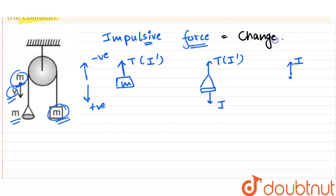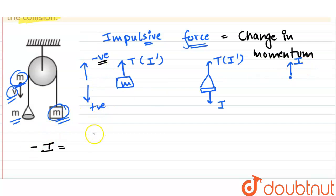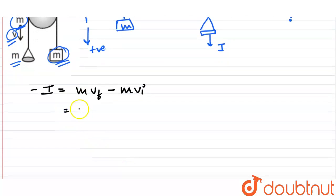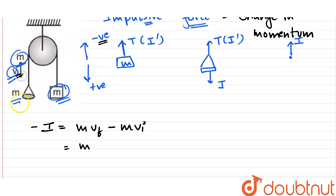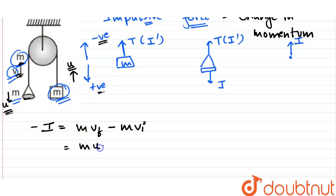We know that impulsive force equals change in momentum. For the particle: I equals m·v_final minus m·v_initial. Since I is in the upward direction and upward is negative, we write minus I. After the collision, the system moves with velocity u — the pan moves with velocity u downward and the block moves with velocity u upward. Since the particle sticks to the pan, the particle also moves with velocity u downward, so the final momentum is m·u and initial is m·v (downward, so positive).